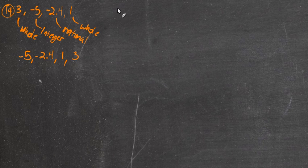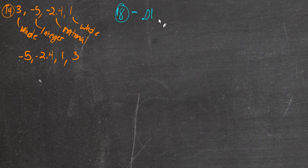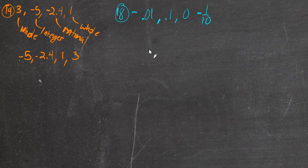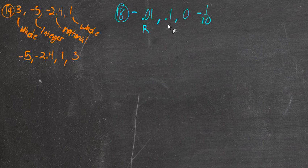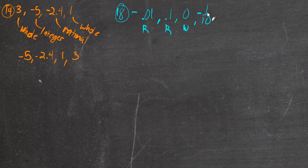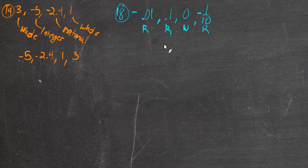Number 18 gives us negative 0.01, 0.1, 0, and negative 1 tenth. We have a rational number here, again a rational number here, then 0 — which is a whole number — and negative 1 tenth is negative and a fraction, so it's not a whole number, not an integer; it's a rational number.